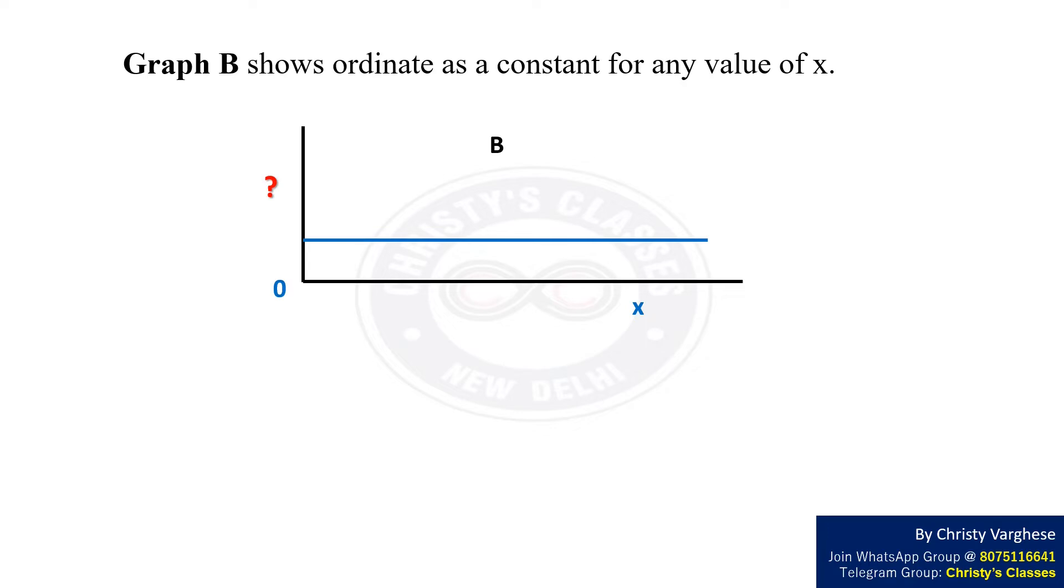From the previous slide, we know that in graph A, x and y are related by the equation y equal to 1 by x. Therefore, we substitute y equal to 1 by x in each of the options given in the question so as to understand which among them gives us a constant.